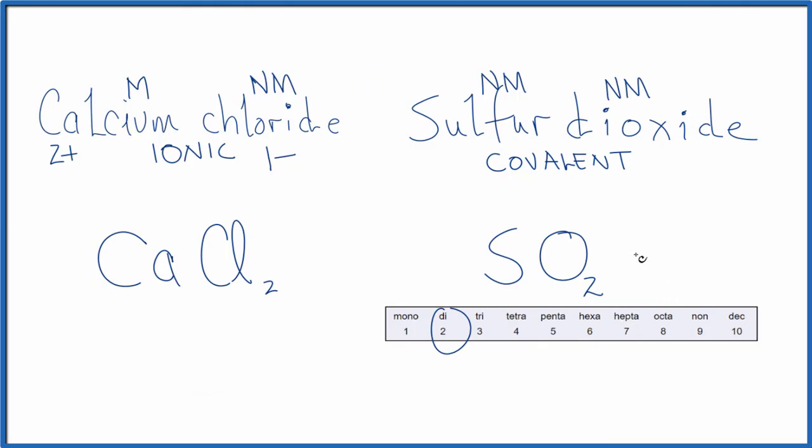So to recap, when you're dealing with metal and nonmetal, that's going to be ionic. You're going to have to worry about ionic charge. When you're dealing with covalent compounds, two nonmetals, you don't need to worry about charge. And you can use the prefixes to show the number of atoms.